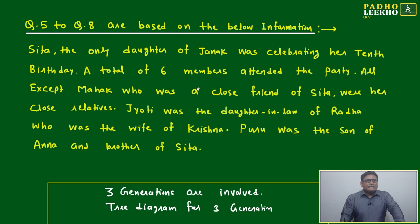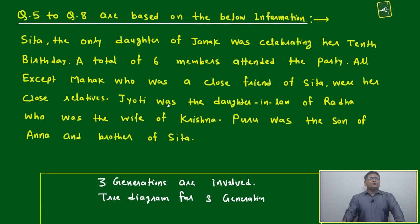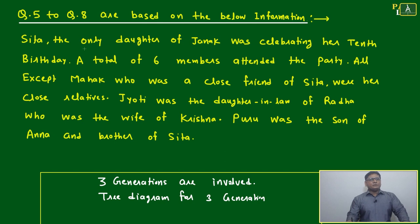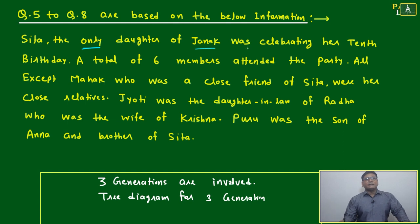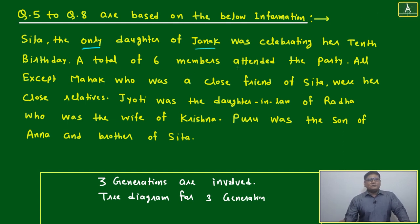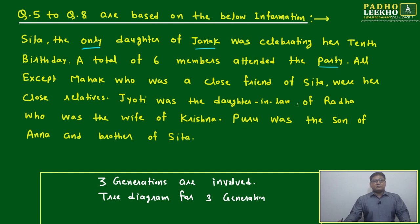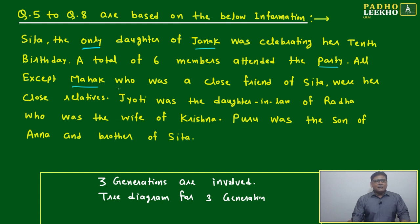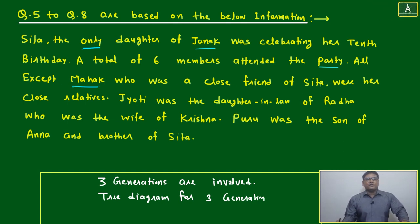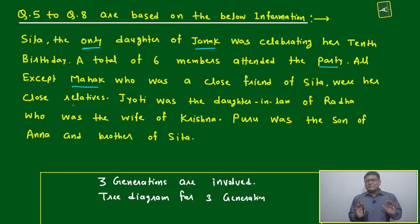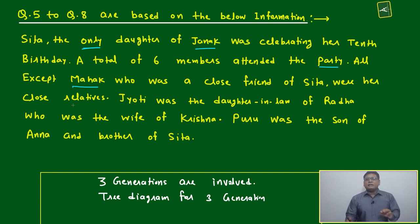Now we'll come to the case-slate based questions. Questions number five to eight will be based on this given information. Sita, the only daughter of Janak, was celebrating her tenth birthday. A total of six members attended the party. We have to keep in mind: all except Mark, who was a close friend of Sita, were her close relatives. So out of six members, only Mark is a friend of Sita; the remaining five are blood relatives.